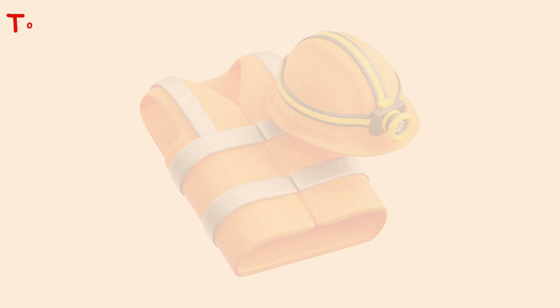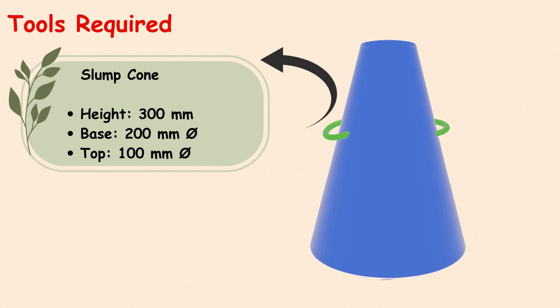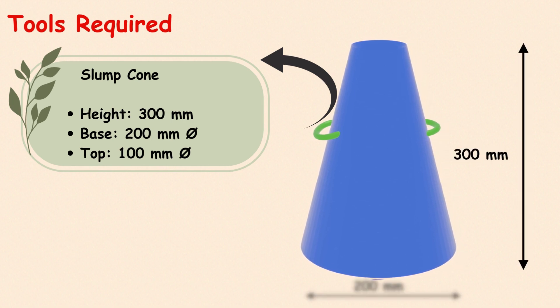To perform the slump test, we need the following tools. A slump cone, also known as the Abrams cone. It has a height of 300mm, a bottom diameter of 200mm, and a top diameter of 100mm.